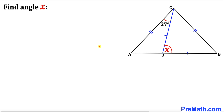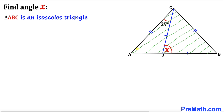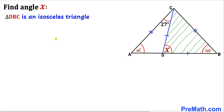Let's get started. Here's our very first step: let's focus on this big triangle ABC. We know this is an isosceles triangle since side length AC equals side length BC. Therefore the base angles must be equal. Let's call this angle alpha — then the other base angle is alpha as well.